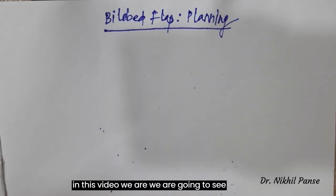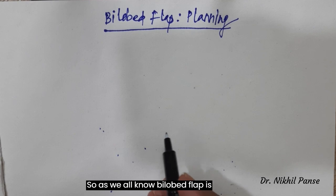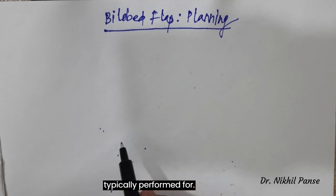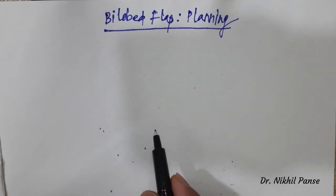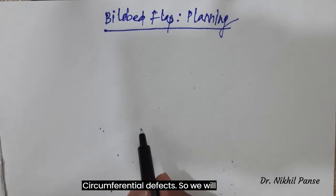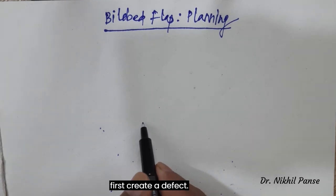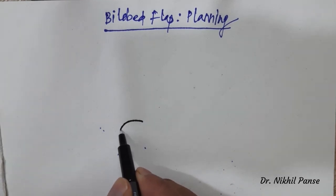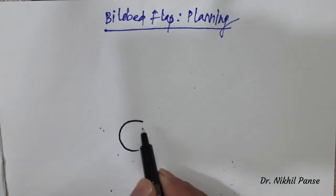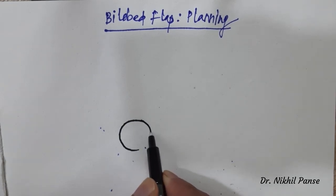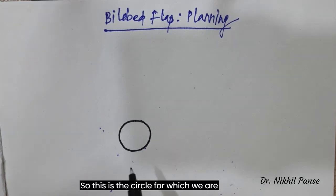In this video we are going to see the planning of a bilobed flap. As we all know, bilobed flap is typically performed for circumferential defects. So we will first create a defect.